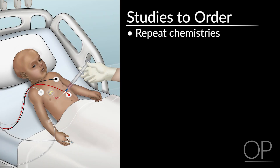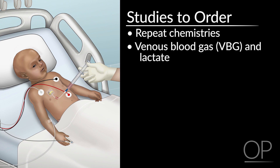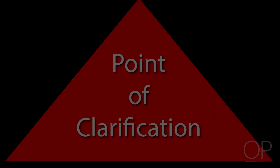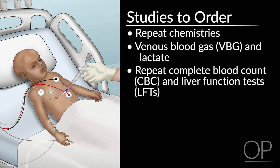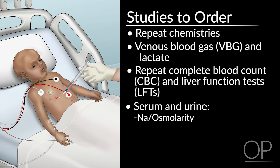Studies to order include rapidly repeating the CHEM-10. Obtain a VBG and lactate if there are any signs of vital sign instability. You can also consider sending whole blood electrolytes with your VBG. Repeat the CBC and liver function tests. It's reasonable to check serum sodium and serum osms as well as urine sodium and osms, and serum sodium and creatinine with a urine sodium and creatinine.